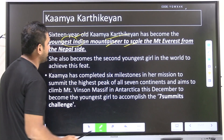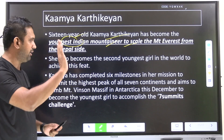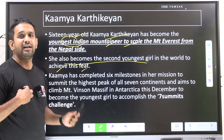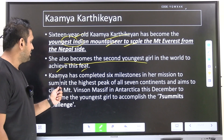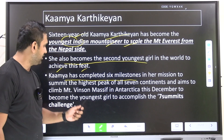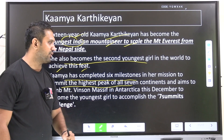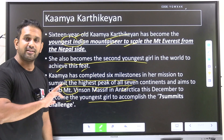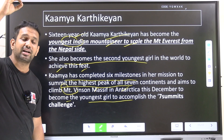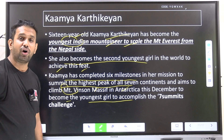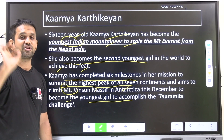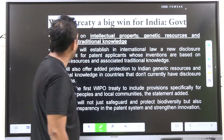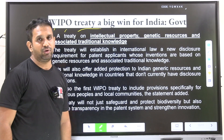Kamya Karthikeyan, a 16-year-old, has become the youngest Indian mountaineer to scale Mount Everest from the Nepal side. She also became the second youngest girl in the world to achieve this feat. Kamya has completed six milestones in her mission to summit the highest peaks of all seven continents. She already climbed Mount Vinson Massif in Antarctica to become the youngest girl to accomplish the Seven Summit Challenge.